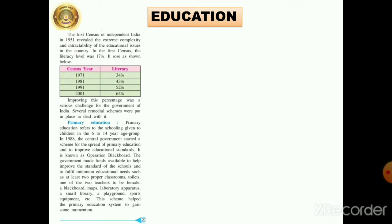We shall take into consideration primary, secondary as well as higher education, and besides research institutions in some respective areas. This will give us an idea of the educational system throughout the country. In this chapter, we are going to study all about education — the history of education and how it progressed in India.